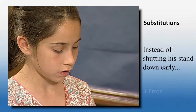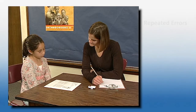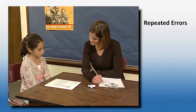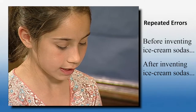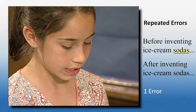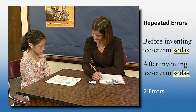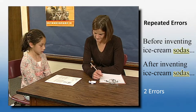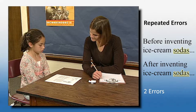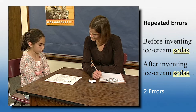[Student reads: "Instead of shutting the stand down early, he decided to make the best of..."] If the student makes the same error more than once, count each instance as an error. [Student reads: "Before inventing ice cream soda, Mr. Green made about $6 a day. After inventing ice cream soda, he made about $600 a day."] Some teachers are taught to count repeated errors only once. However, because the final score for a Read Naturally timing is really the number of words the student can read correctly in a minute, we have to deduct errors each time they're repeated.